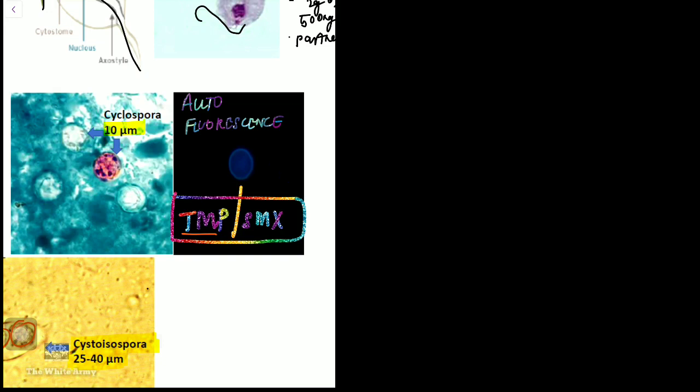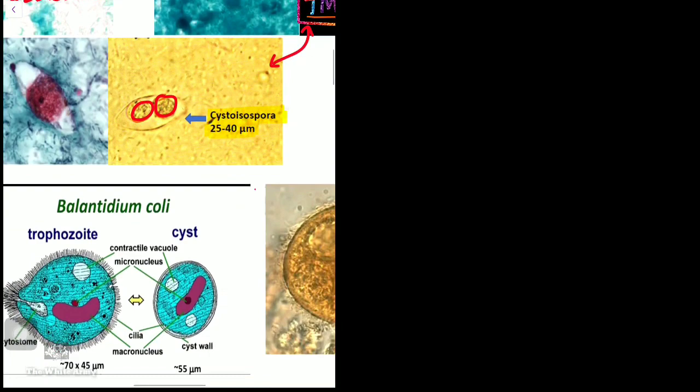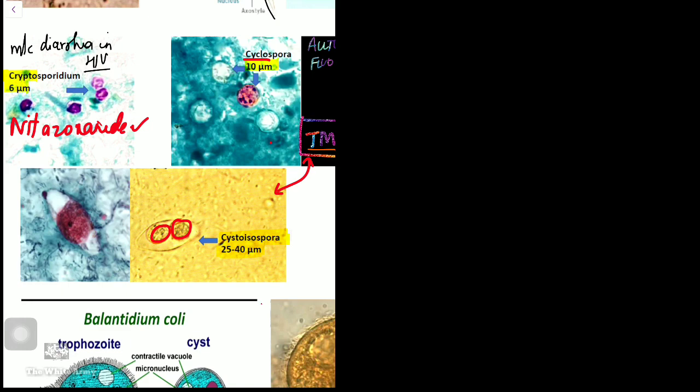Cyclospora has two important properties: autofluorescence (beautiful autofluorescence visible under fluorescence microscopy) and treatment with cotrimoxazole (trimethoprim-sulfamethoxazole). This same drug treats Isospora belli. Isospora belli shows two internal budding cells. Cryptosporidium is treated with nitazoxanide, while Cyclospora and Isospora are treated with trimethoprim-sulfamethoxazole.